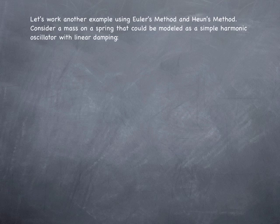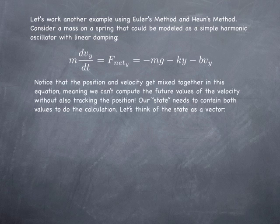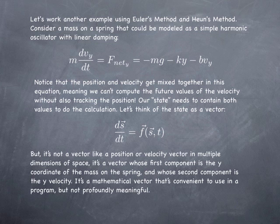Let's work out an example using Euler's method and Heun's method. Consider a mass on a spring that could be modeled as a simple harmonic oscillator with damping. The differential equation, it's basically Newton's second law, would look something like this. Notice it's got weight, it's got a spring force, and it's got a damping force. This is laminar drag, basically, proportional to velocity. The thing is, the velocity and position are mixed together in Newton's second law, so that the state needs to know both things. It needs two numbers to predict the future. It needs to know the current position, and it needs to know the current velocity. So how do we deal with that? We think of state as a vector. The function f is now a vector function that accepts a vector state and returns a vector rate of change of state with time. But it's not a vector like a position vector or a velocity vector. It's an abstract mathematical vector. Its first component is the position. Its second component is the velocity.